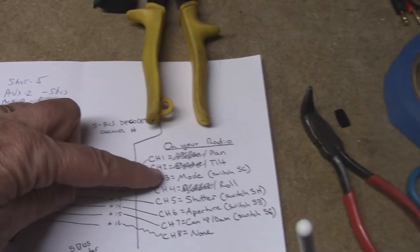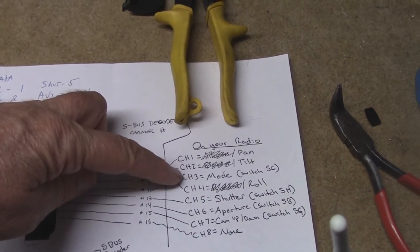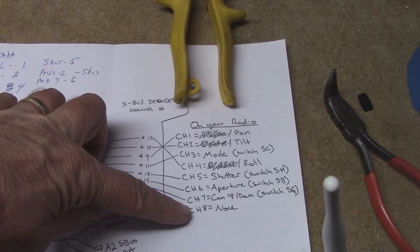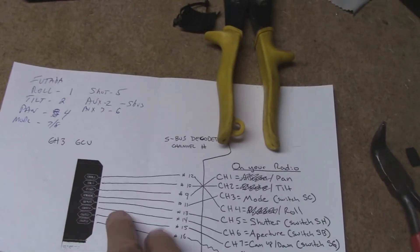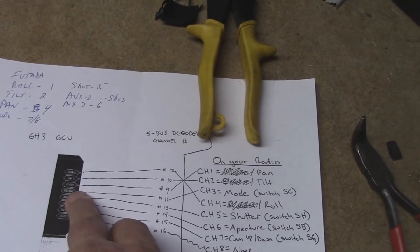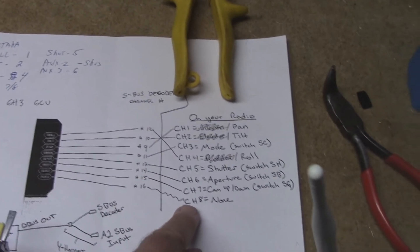One of the things that I did do is my mode switch right here, my channel three mode, I switched that down to channel eight. I didn't like the way that it works. So coming out of the GCU, the mode, I now have mapped over to channel eight.